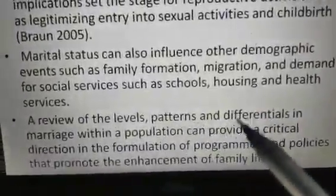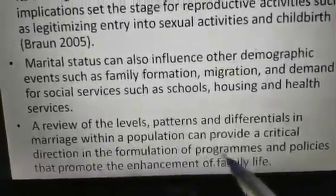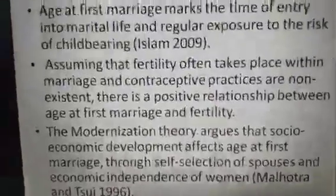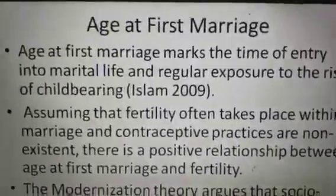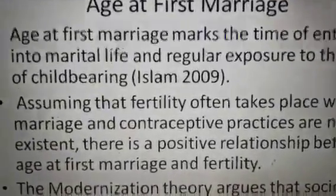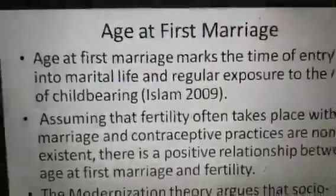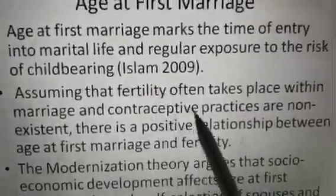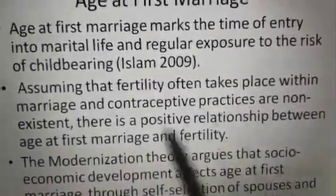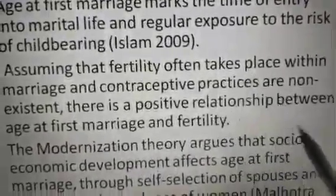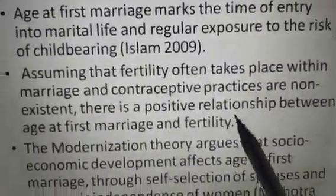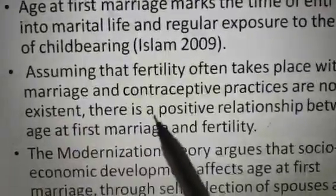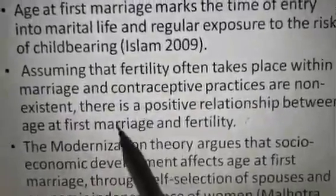A review of the levels, patterns, and differentials in marriage within a population can provide a critical direction in the formulation of programs and policies that promote the enhancement of family life. When we talk about the Nuptiality rate, we should first know about the age at first marriage. Age at first marriage marks the time of entry into marital life and regular exposure to the risk of childbearing. Assuming that fertility often takes place within marriage and contraceptive practices are non-existent, there is a positive relationship between age at first marriage and fertility.